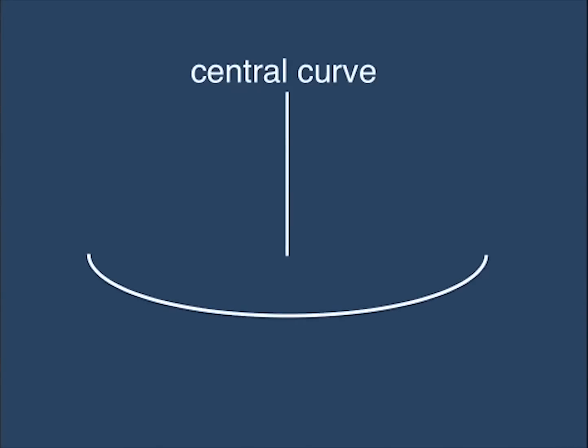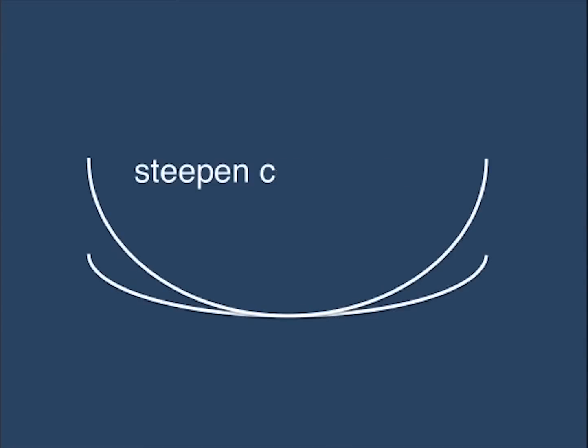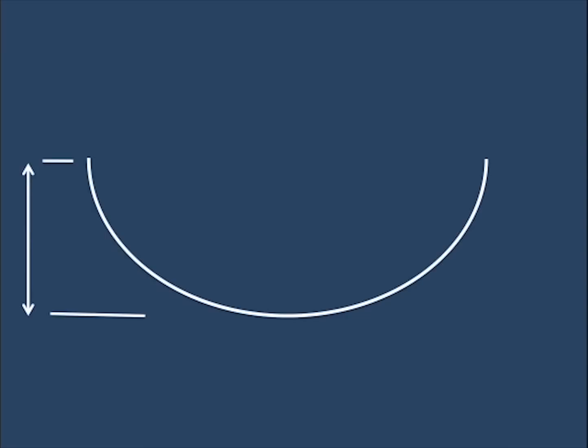Clinically, we can manipulate the sagittal depth by changing the central base curve or the curve at the limbal region of the lens. Steepening the central curve of the lens increases the sagittal depth. Steepening the limbal area would have the same effect on this lens. Flattening the central lens area would decrease the sagittal depth, and flattening the limbal curves of the lens would have the same effect.